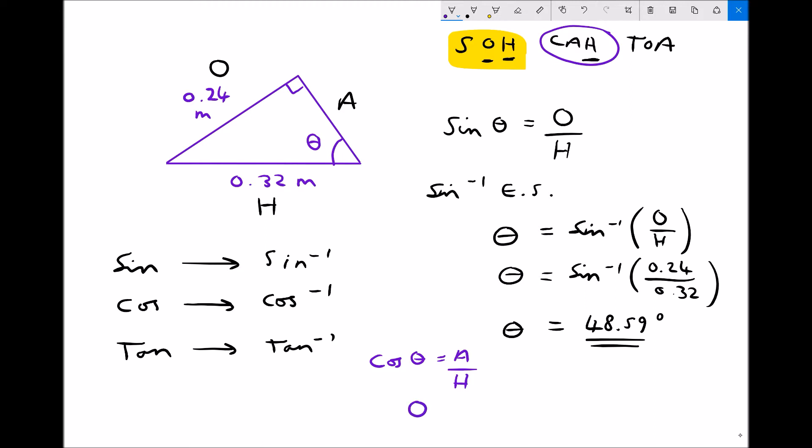Therefore, theta equals cos to the minus 1 of adjacent over hypotenuse. So we can use that equation to find angle theta if the other variables are known.